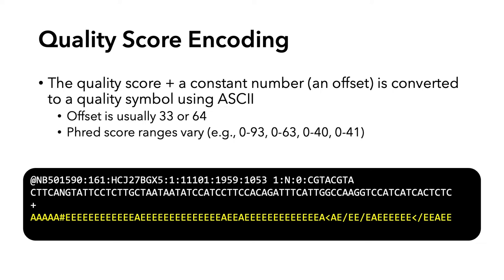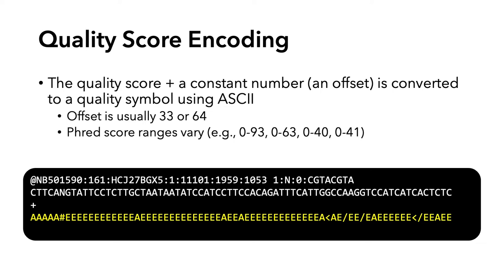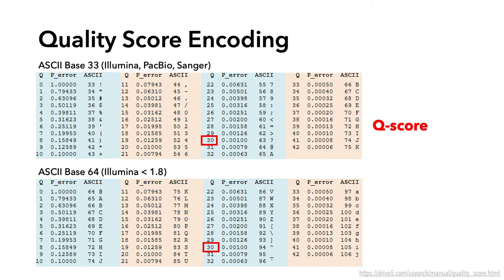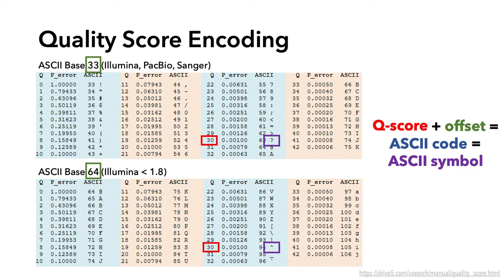The offset is usually 33 or 64, and Phred scores can vary from 0 to 93, 0 to 63, 0 to 40, or 0 to 41, depending on the specific sequencing platform and software used. To encode: you take the Q score, add the offset — usually 33 or 64 — and that gives you the ASCII code, which you encode with the ASCII symbol. For ASCII base 33, a question mark corresponds to a Q score of 30.